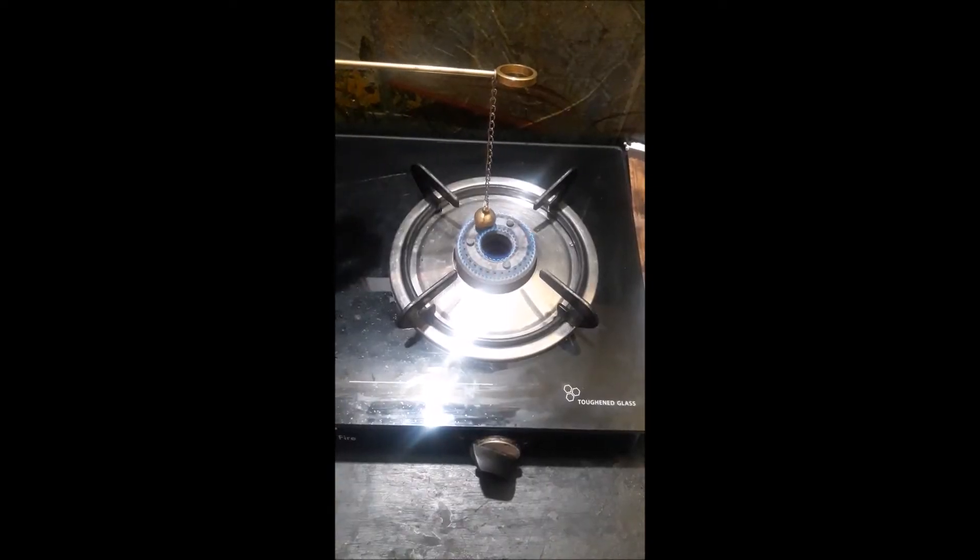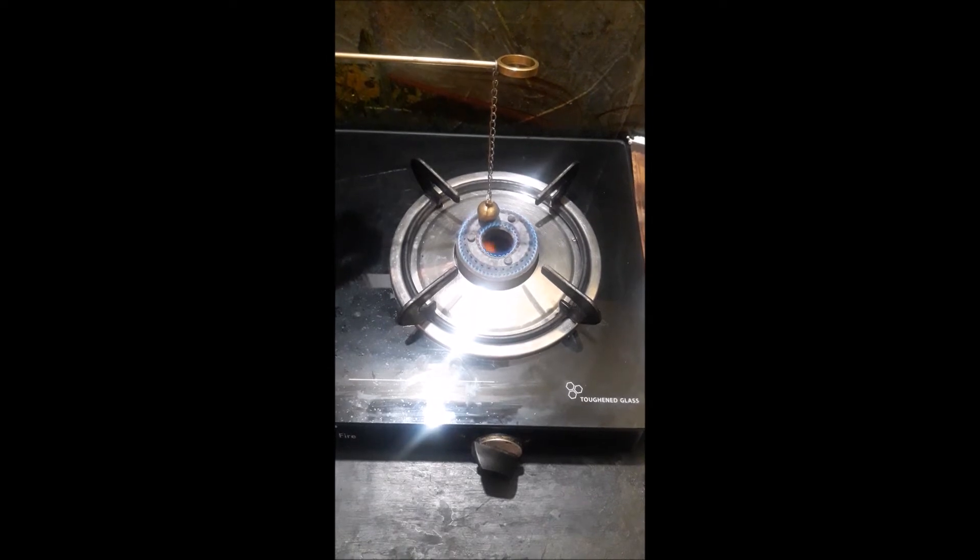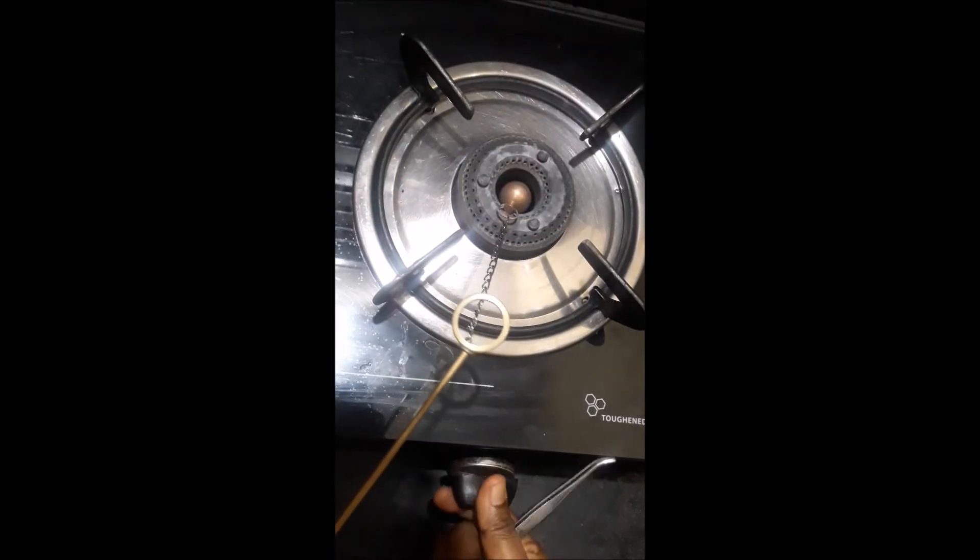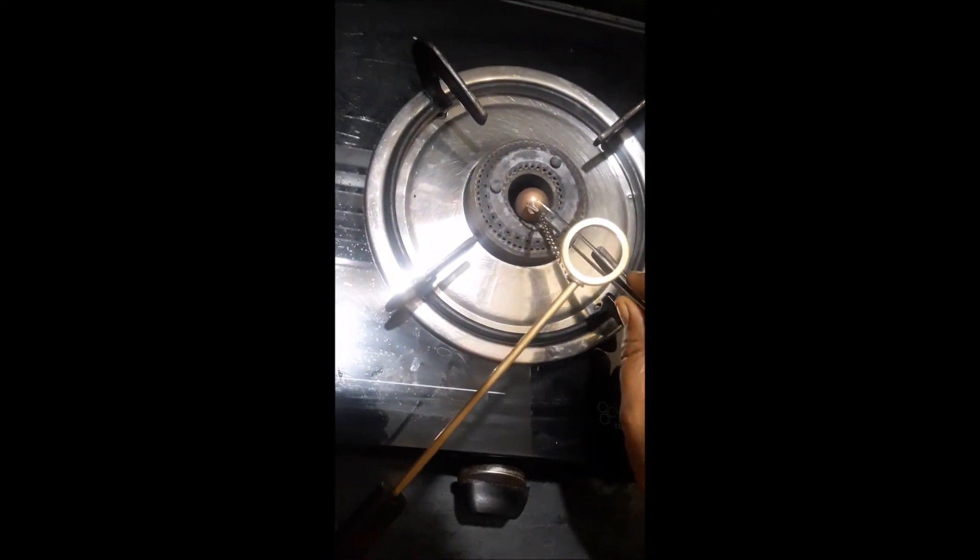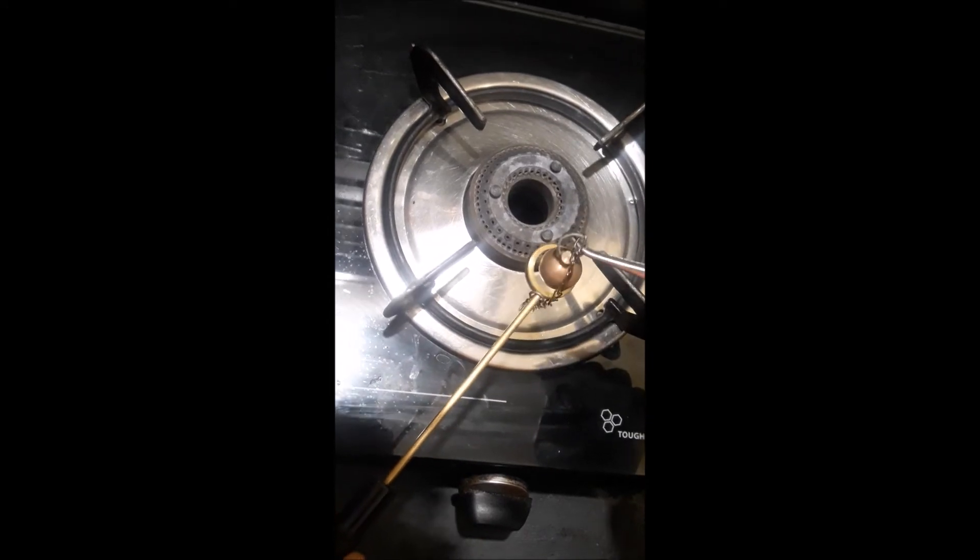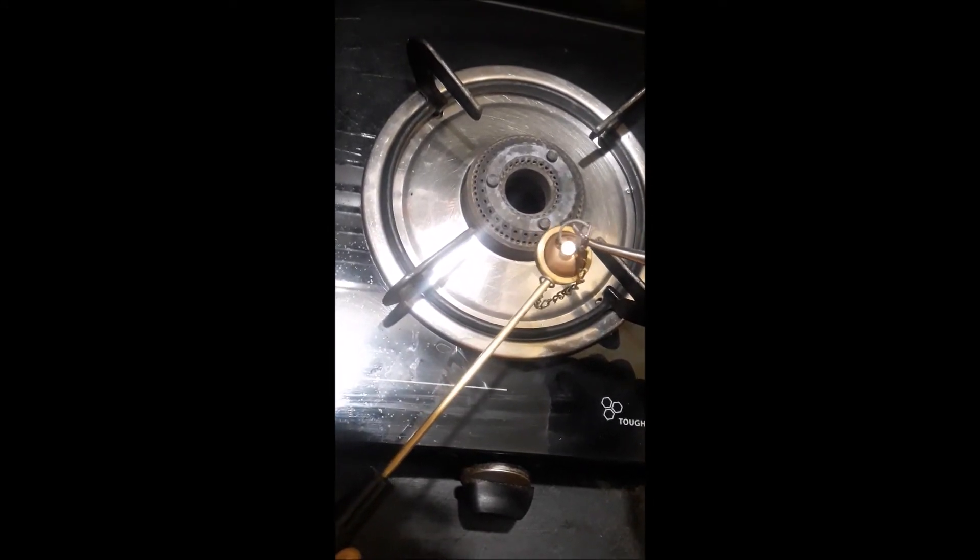Now heat the metal ball and then try to pass it through the ring. It will not pass through the ring. Keep the metal ball on the ring for some time. In a few minutes, it will fall through the ring.